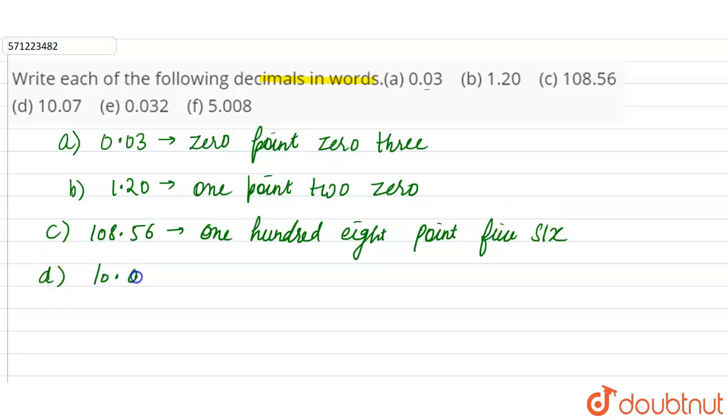Then 10.07. This is ten point zero seven.